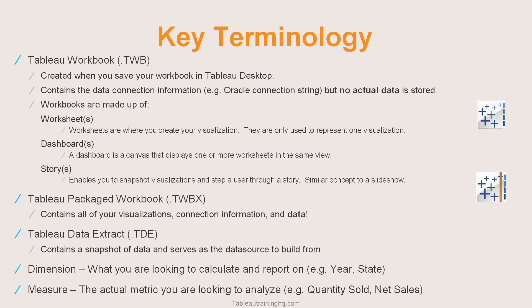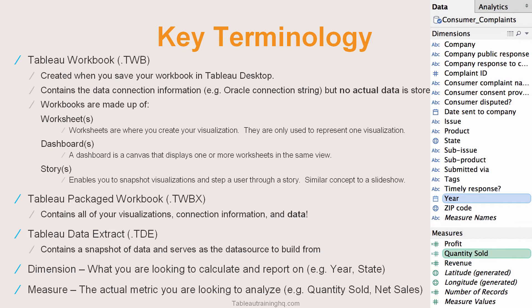We also have two different object types in Tableau: dimensions, which are the things we're looking to report on, and measures, which are the metrics we're looking to analyze. A brief example would be quantity sold by year — year is a dimension, and quantity sold is your measure because you're measuring quantity on a yearly basis.